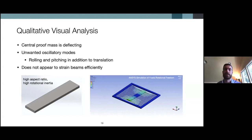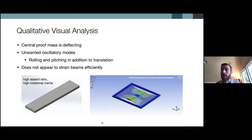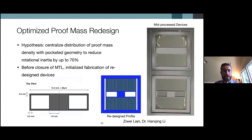But the beams themselves are not efficiently being axially strained — this is not a pure translational oscillation; there's some pitching and rolling, some different modes of oscillation occurring that are not intended. The central proof mass was deflecting, but we're seeing unwanted oscillatory modes in addition to the pure up-and-down out-of-plane movement we want. The reason for this is that even for MEMS-scale designs, even a few millimeters can result in a very high aspect ratio element such as the proof mass, which results in high rotational inertia about the center axis.